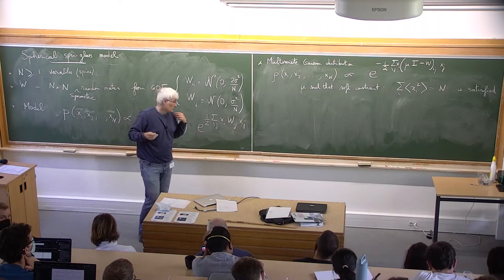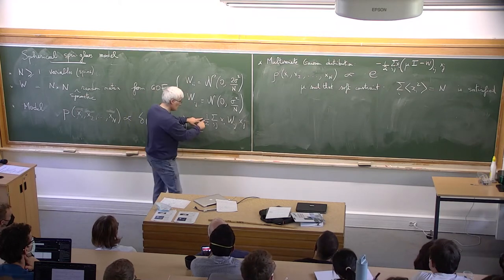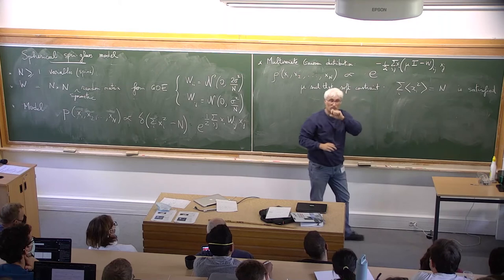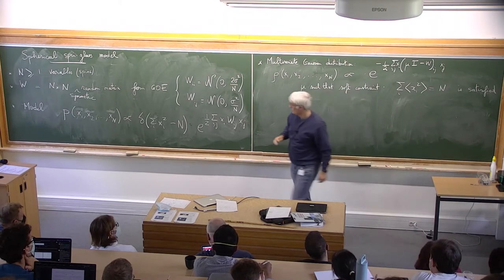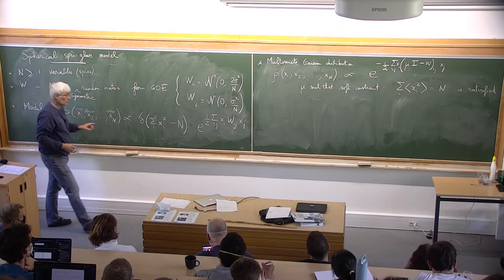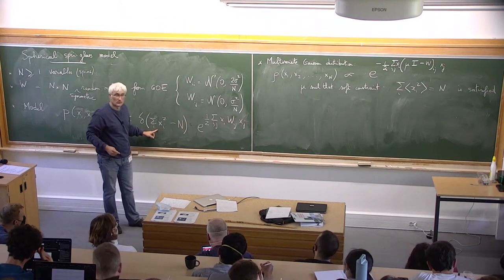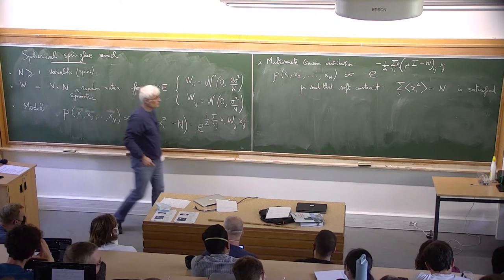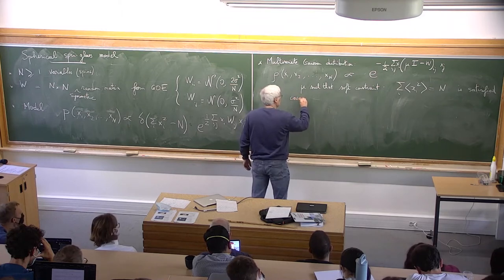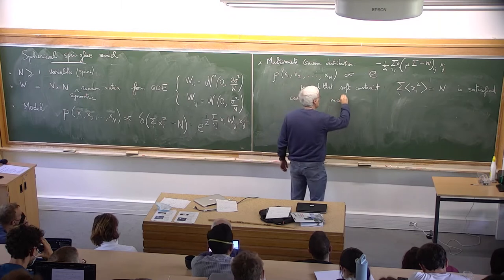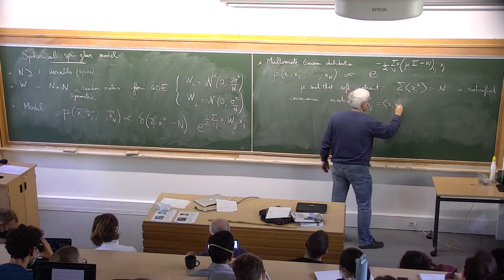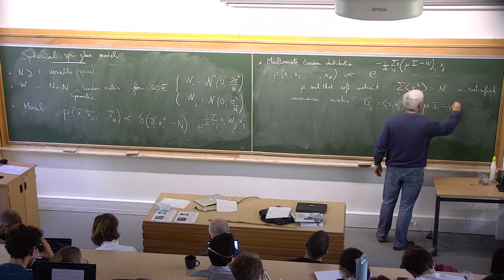I am replacing a hard constraint by a constraint which is true only on average — it's not the same model. This one is a hard constraint; this one is just a multivariate Gaussian distribution. The covariance matrix C_ij is simply the inverse: mu times identity minus w, to the minus one. So the average values of x_i are zero, and the second moment is simply given by (mu I - W)^{-1}_{ij}.